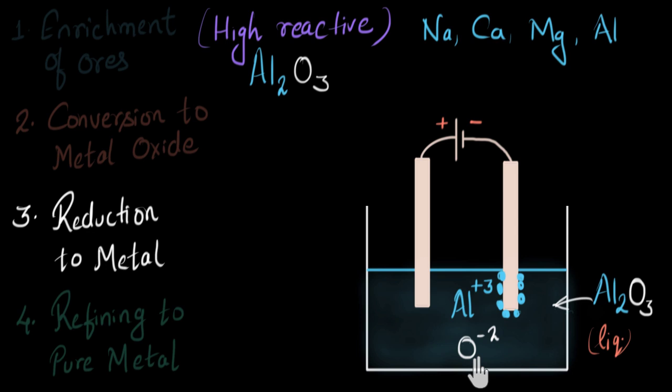Similarly, the negative ion of oxygen will now get attracted to the positive electrode. Opposite attract, right? So once it comes over here, it will deposit the extra electrons that it has and then will combine with other oxygen atoms to form O2 molecule. And these oxygen molecules will bubble out of the solution. So this is how, by passing electricity, we can reduce the aluminium compound into aluminium and oxygen.